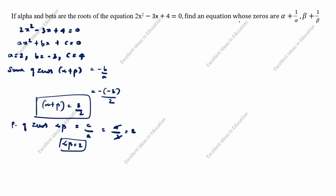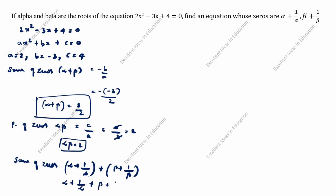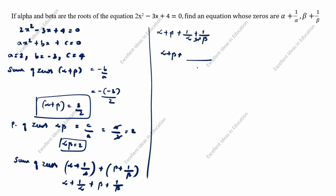The new zeros are alpha + 1/alpha and beta + 1/beta. We will find the sum of the new zeros: (alpha + 1/alpha) + (beta + 1/beta). Rearranging, this becomes alpha + beta + 1/beta + 1/alpha, which equals alpha + beta + (beta + alpha)/(alpha × beta). Substituting: 3/2 + (3/2) / 2.